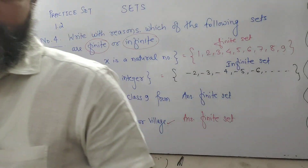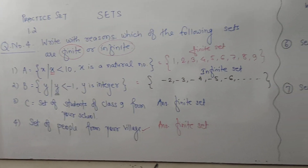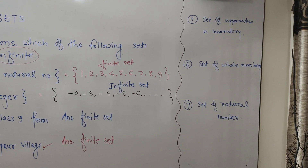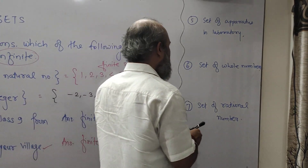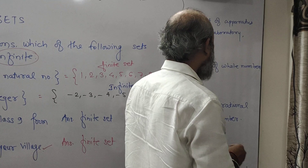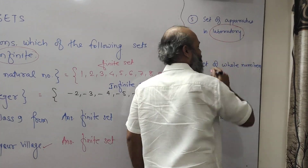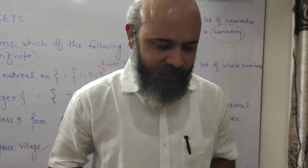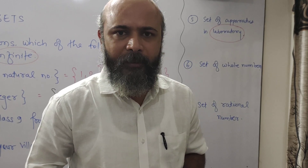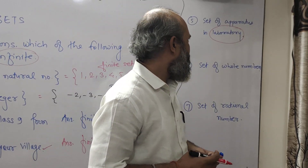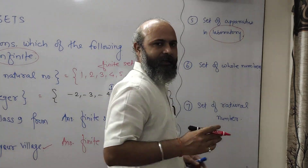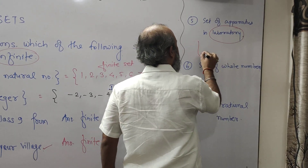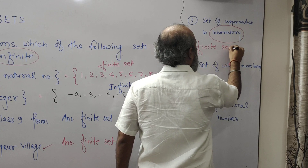Fifth one is the set of apparatus in a laboratory. In your school laboratory there is physics apparatus, chemistry apparatus, and biological apparatus — and they are countable. You can count the apparatus in the laboratory. Therefore, this is again a finite set.